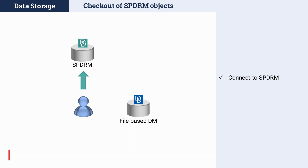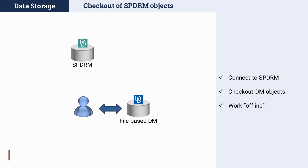To address this, starting from ANSA version 21, it is possible for DM objects and their dependencies to be checked out into a file-based DM, so that users can work for short periods of time without being connected to SPDRM. This checkout is a high-fidelity copy of the data in SPDRM, meaning that the representation files stored in the file-based DM are the same as those stored in SPDRM, with ANSA introducing minimal changes to make the files usable. For example, any include references in the main solver files are updated with new paths from the file-based DM. Any attached files are also checked out. It should be noted that the checkout functionality is currently supported only for Nastran, LS-Dyna, and PAMCRAS solver files.